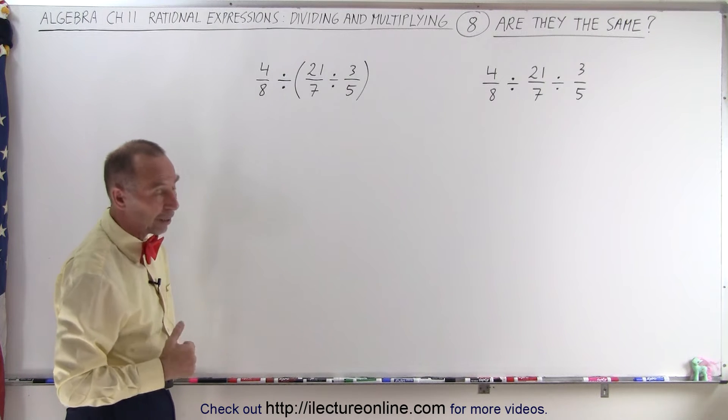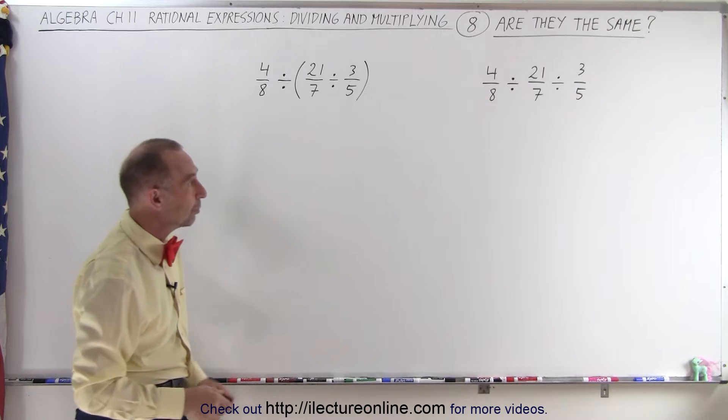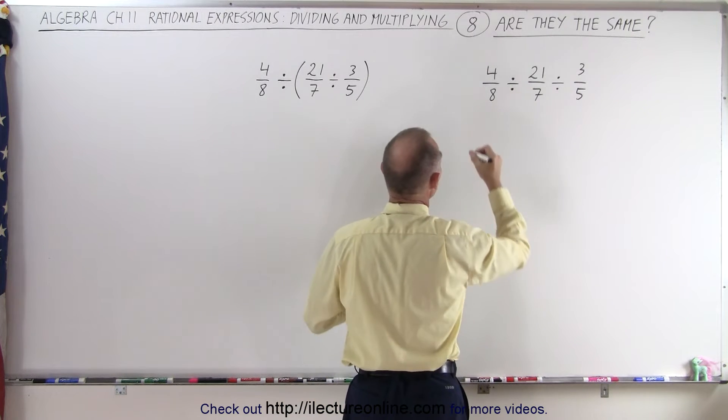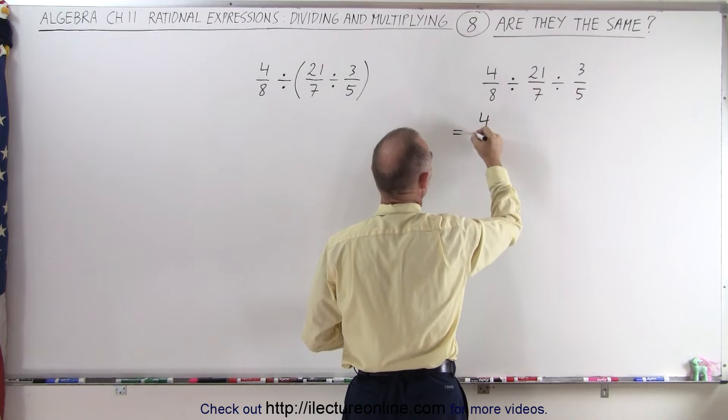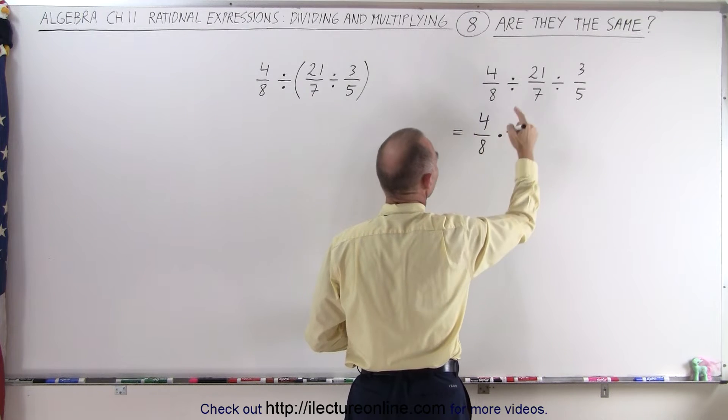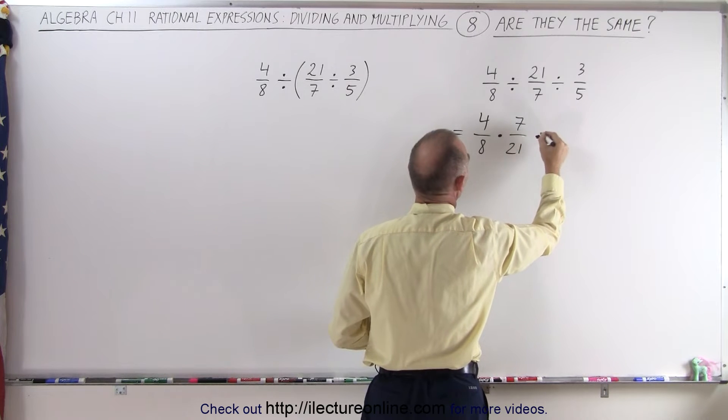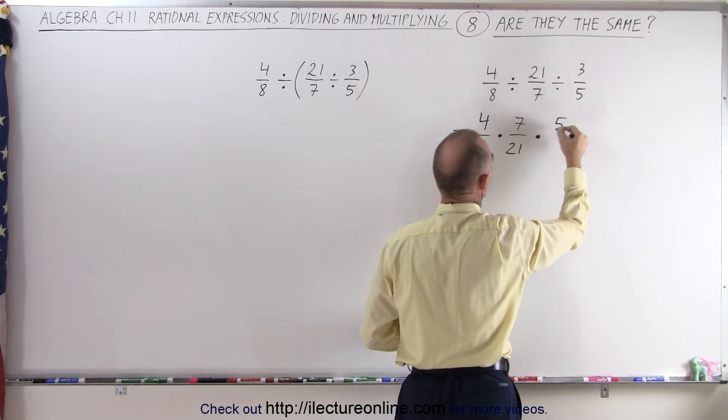Now let's start with the one on the right. We've done a couple of those already, so we know that we need to use the rule starting from left to right. We're going to rewrite this as 4 divided by 8, multiply times the inverse of that, which is 7 over 21, multiply times the inverse of that, which is 5 over 3.